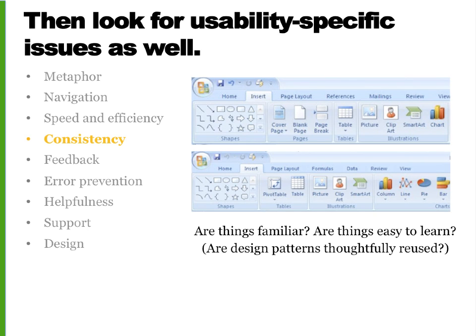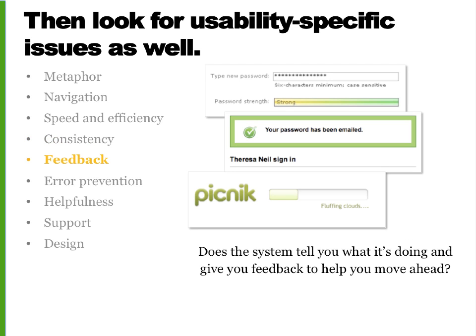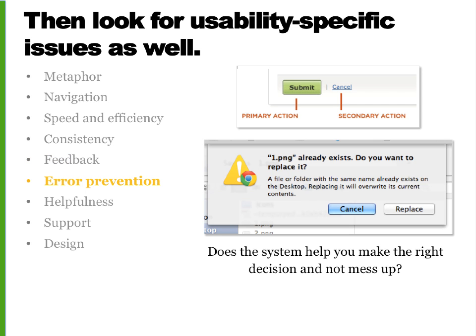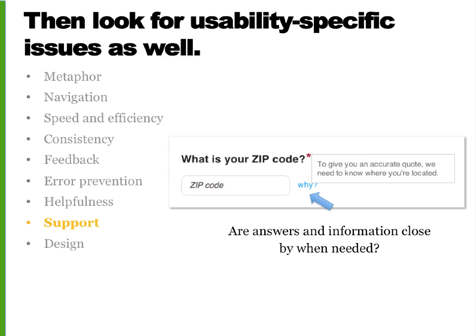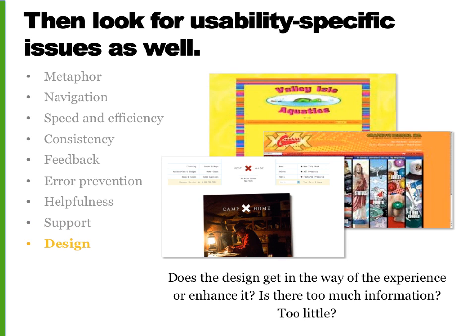Word, Excel, and PowerPoint all use the same style toolbar with the same primary menu options — that's a good example of consistency. Feedback: Does the system clearly communicate the result of your actions, and does it let you know when it's working on something? Or does it just appear to stall out or be broken? Error prevention: Is it easy to get errors? Hard to get errors? Or better yet, impossible to get errors? Helpfulness: Does it recognize what you're trying to do and make useful suggestions, or does it make you enter exactly what you want? Support: Is support nearby when you need help or more information? And design: Does the design make it easier or harder to use? How does the design feel? Is it pleasant or does it get in the way?